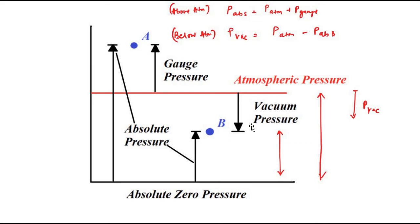These concepts may take a little time to grasp, so be patient and understand them step by step. To summarize: all measurements done with respect to absolute zero pressure or vacuum are absolute pressure. Measurements with respect to atmospheric pressure — above it — are gauge pressure, and below it are vacuum pressure. In all fluid measurement devices, the pressure measured is always with respect to atmospheric pressure, so it is called gauge pressure. I hope you liked this video; please subscribe to Engineering Tutorial for more videos on engineering, science, and technology.